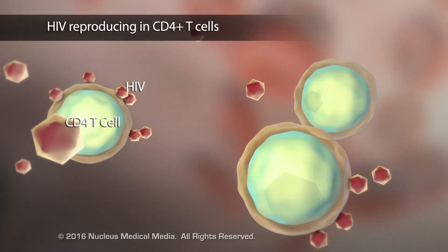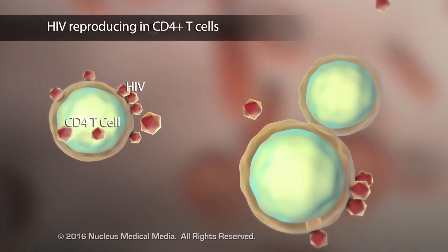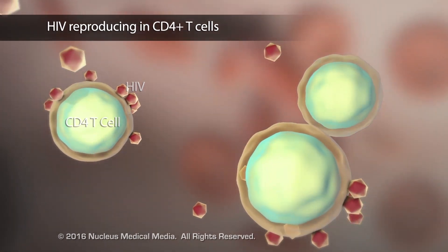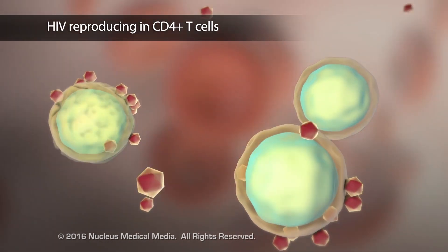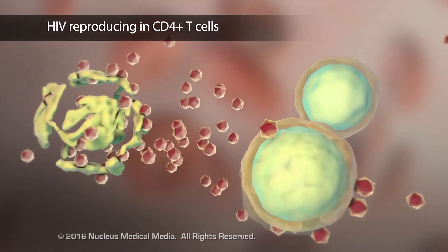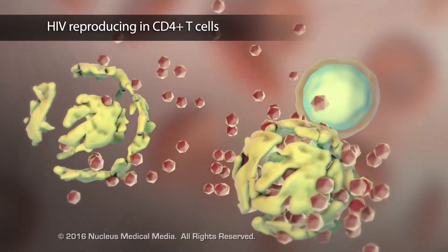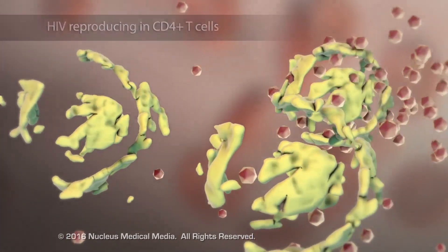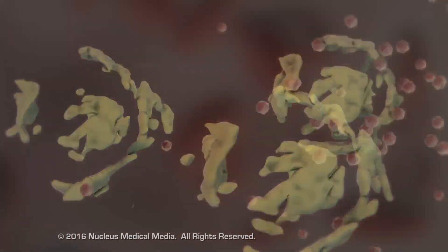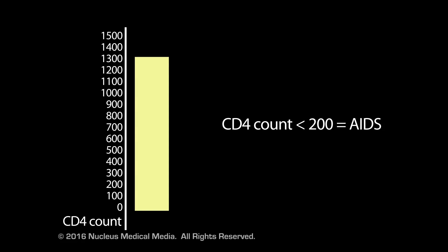As HIV continues to replicate and destroy more CD4 T-cells, the body becomes defenseless, succumbing to infections. When a CD4 count drops below 200, a person is considered to have AIDS.